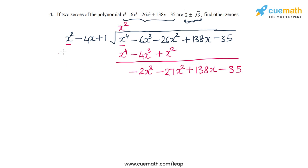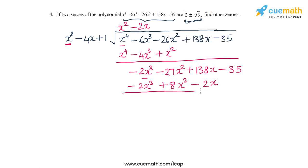In the second step, we need to eliminate minus 2x cubed. So we use the multiplier minus 2x, which generates the terms minus 2x cubed plus 8x squared and minus 2x. Subtracting these terms, we get minus 35x squared plus 140x.